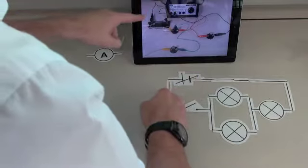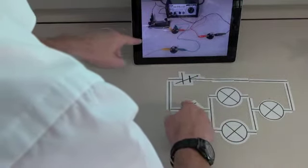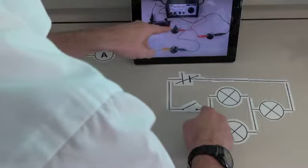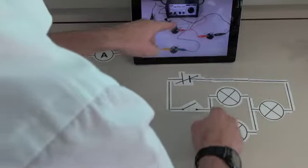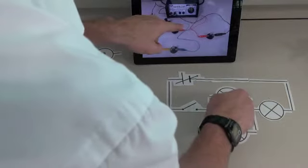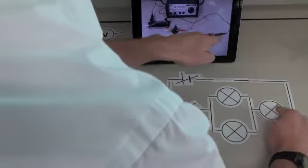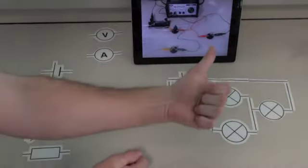So we come from the power supply down through the switch, which then links up with two bulbs which are in what we call a parallel circuit. So they go across and then they join back together and come back through a single bulb and then go back to the power supply.